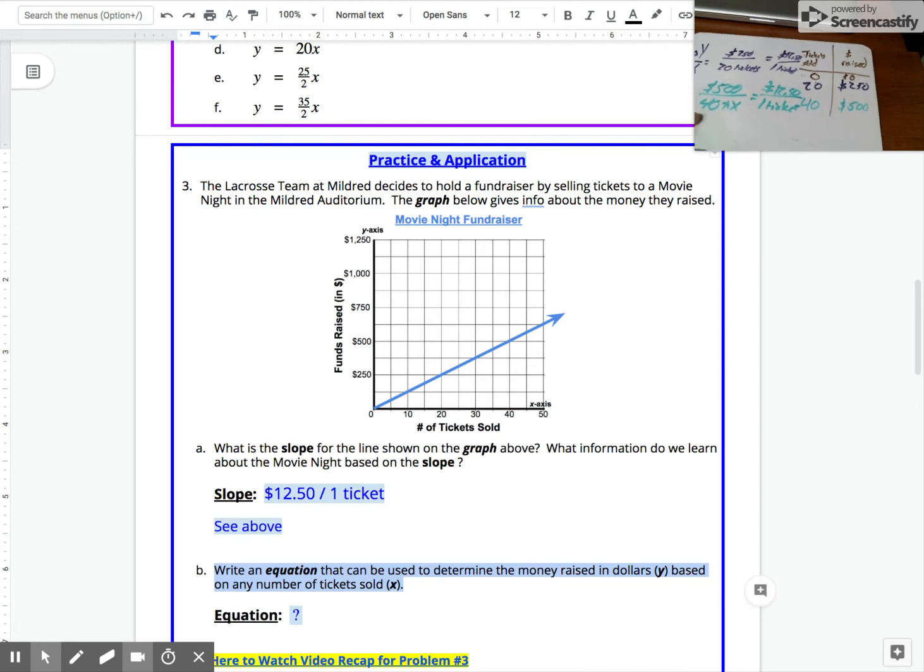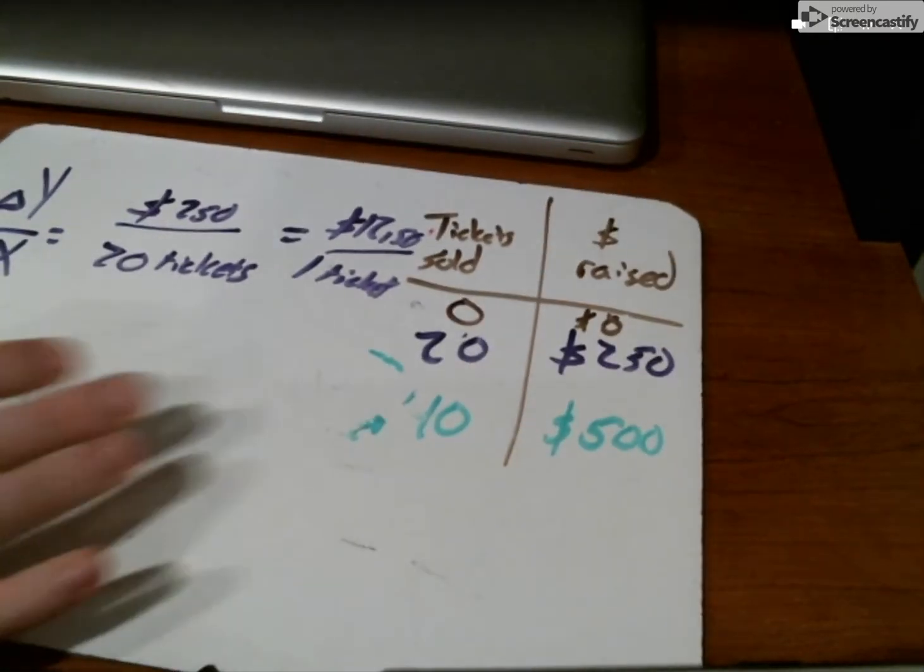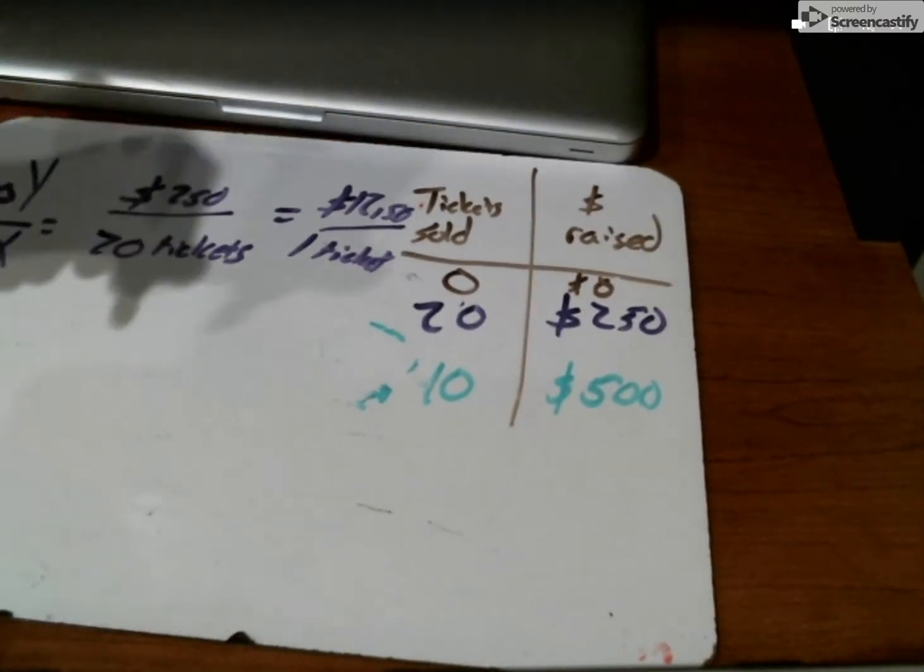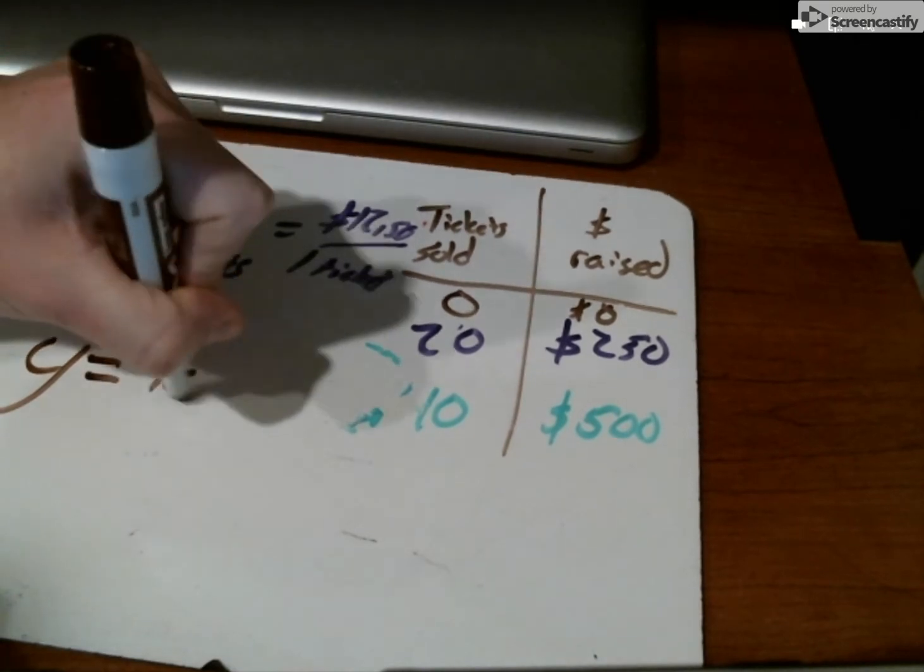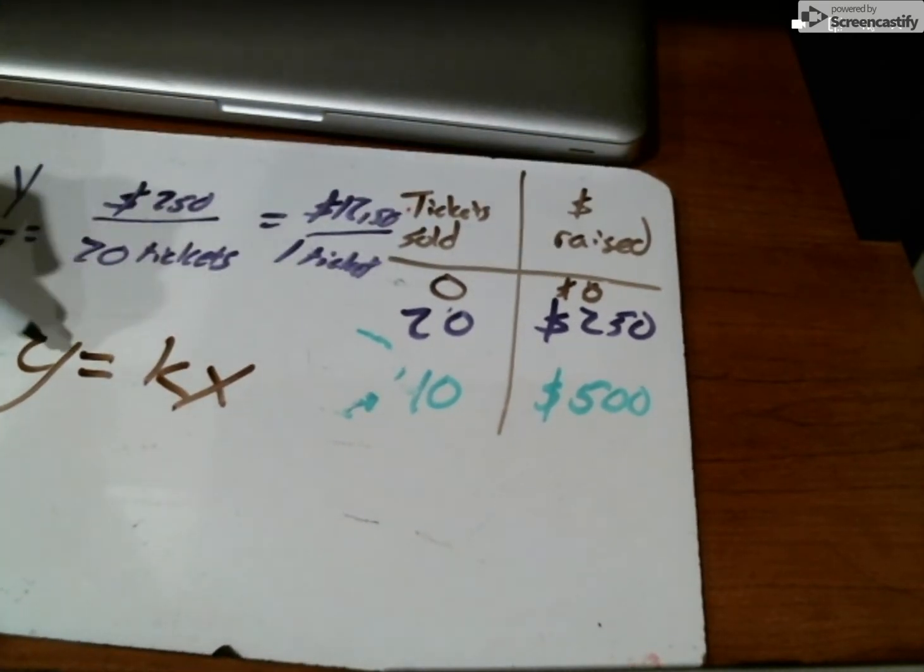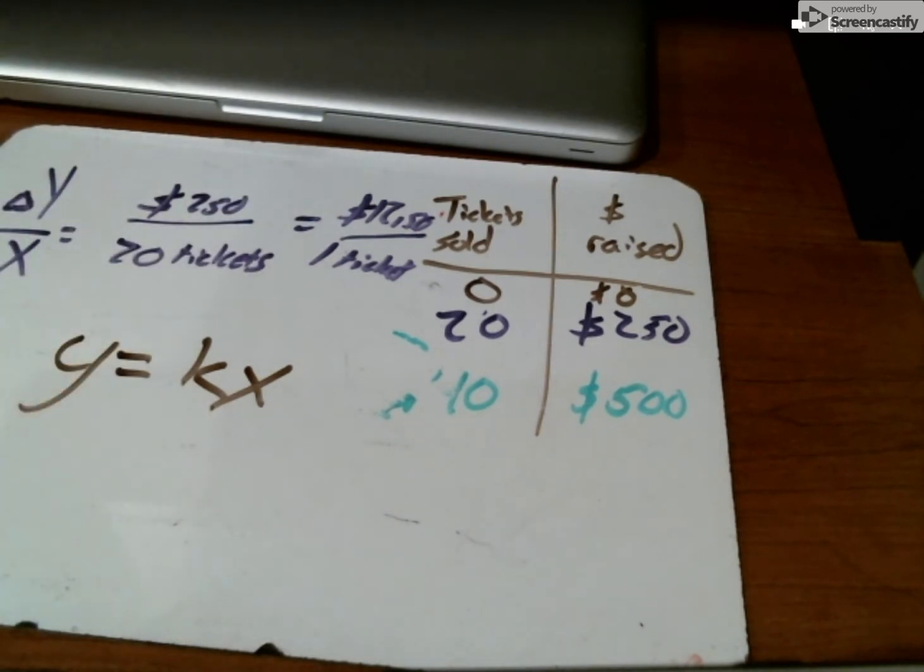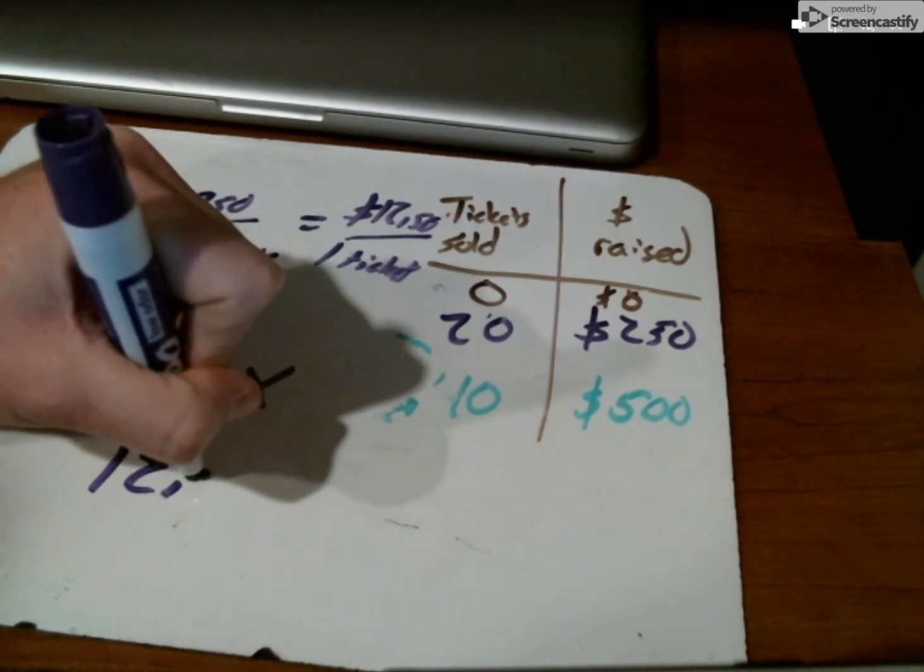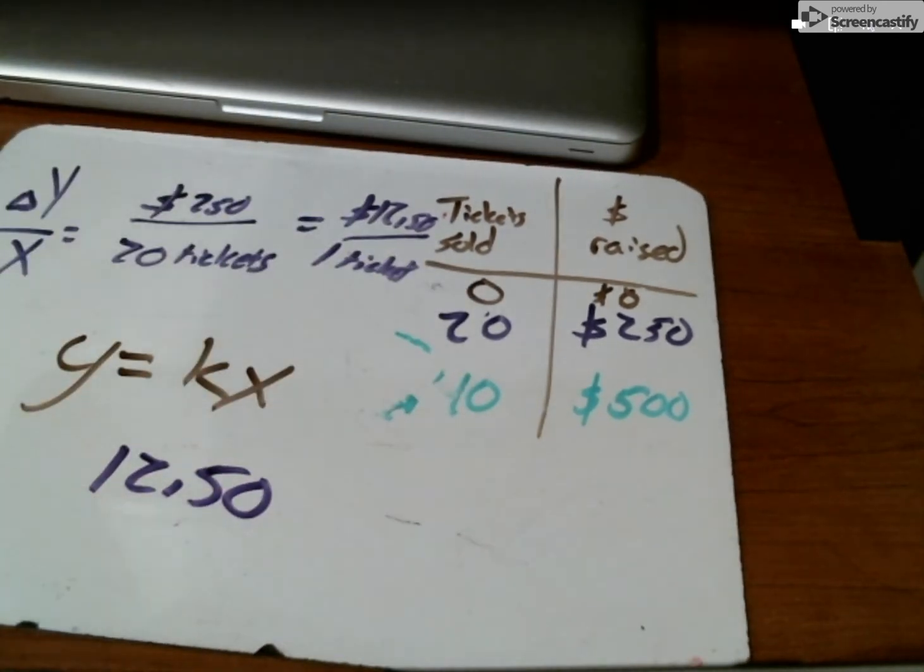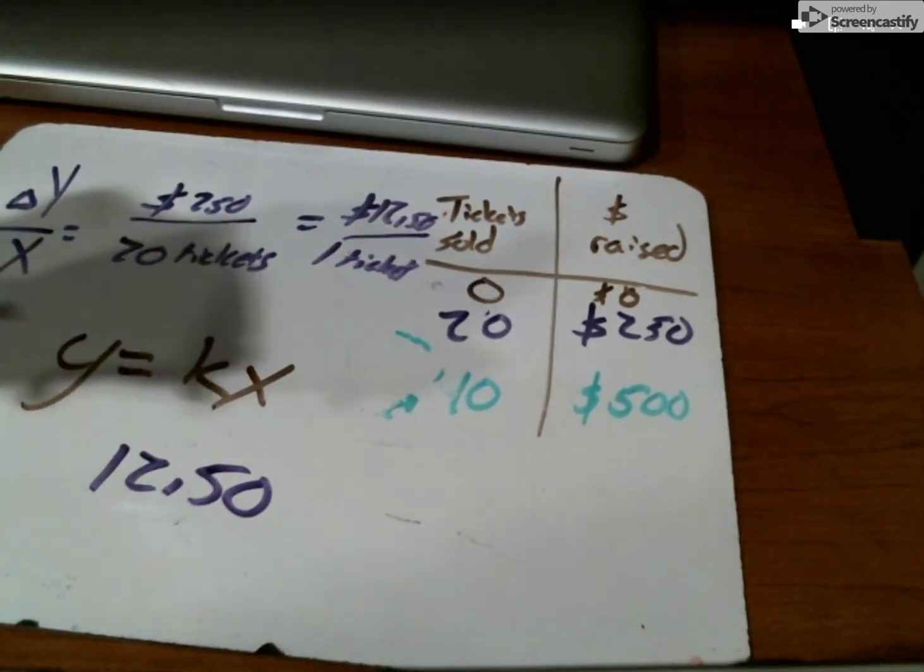We'll erase a little bit on the whiteboard and put that in full screen. We want to remember this is a proportional relationship, and every proportional relationship can have an equation written pretty quickly where y equals kx. That constant ratio, that constant slope we kept seeing of twelve point five, becomes the unit rate and that multiplies with x, our number of tickets, and that equals y.